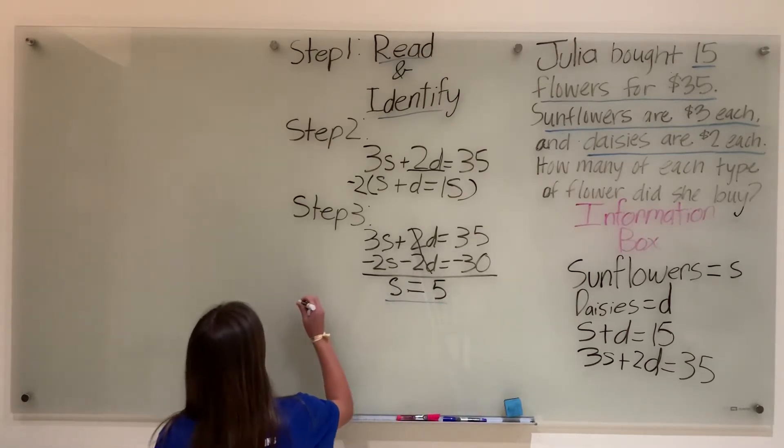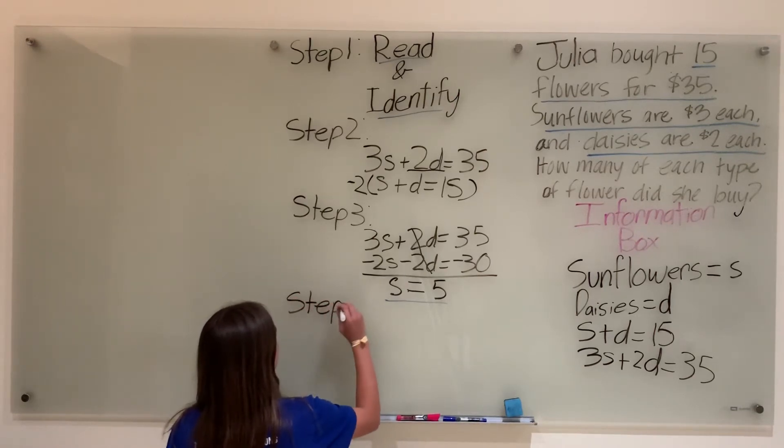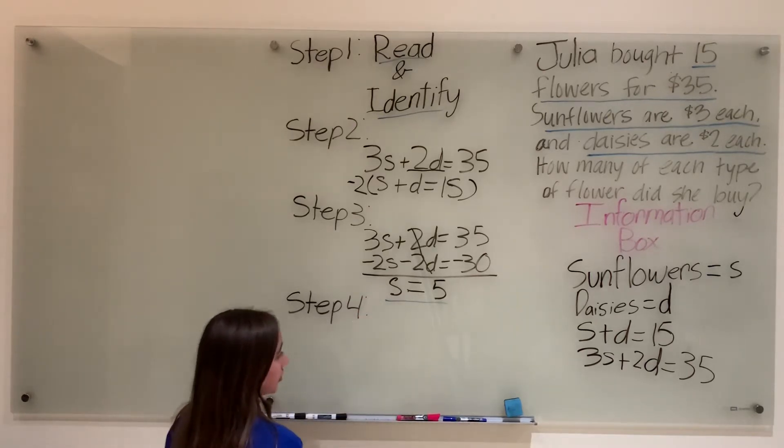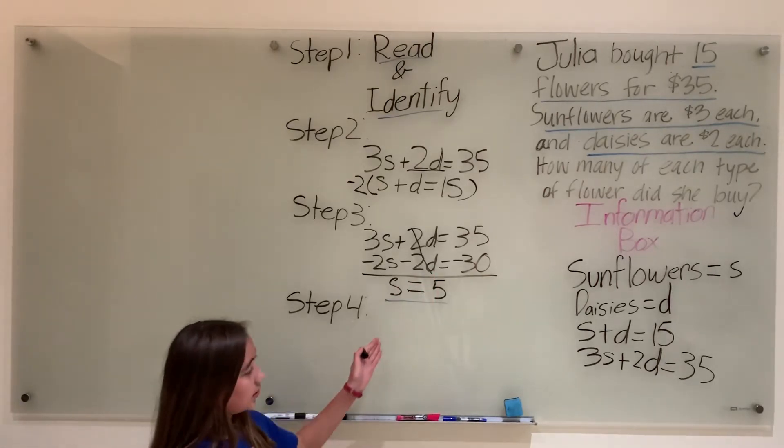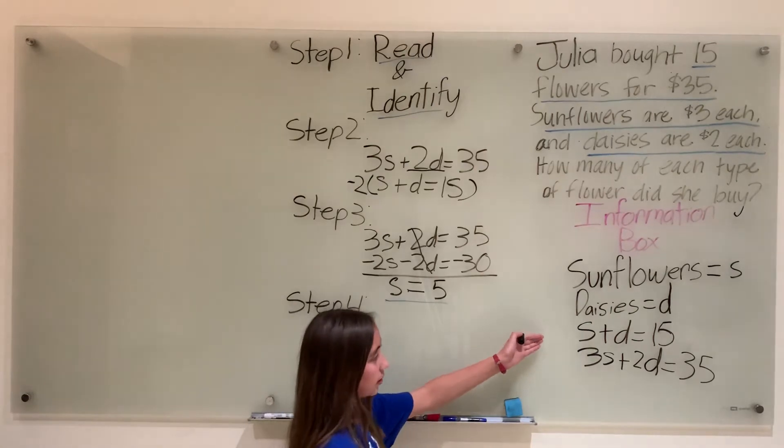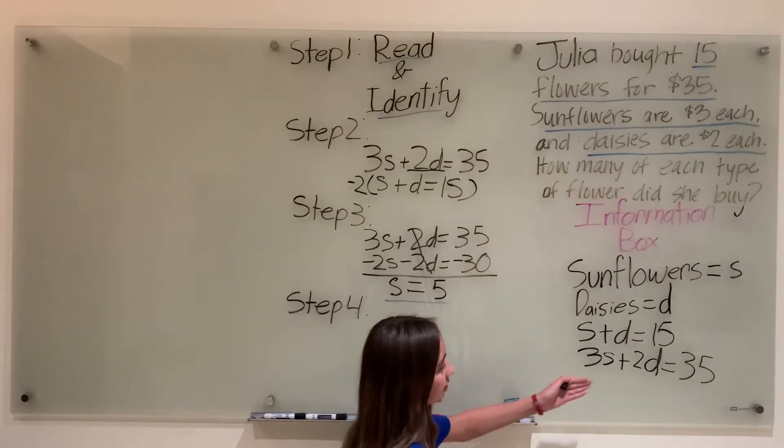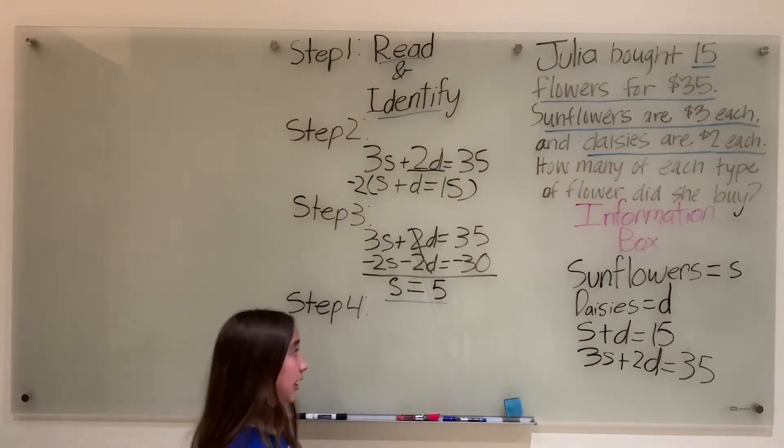So on to step 4. Step 4 is to plug in what one of the variables equals into your equation. So the easiest way to find out what the second variable d equals is to plug it into the equation which is the most simplest one, without coefficients, smaller numbers, s plus d equals 15.